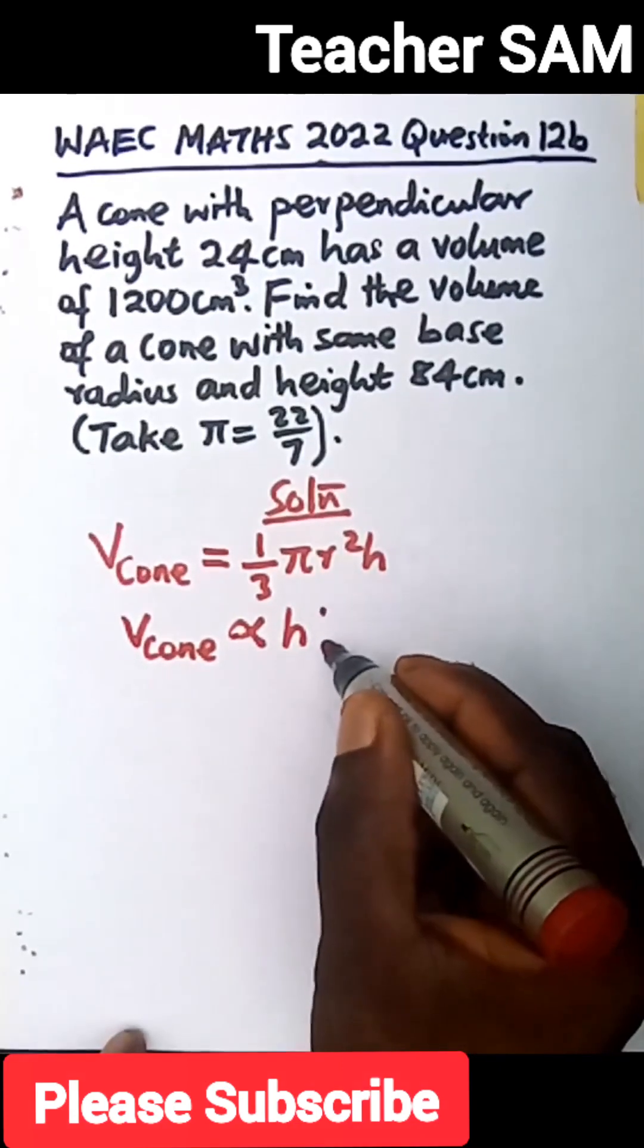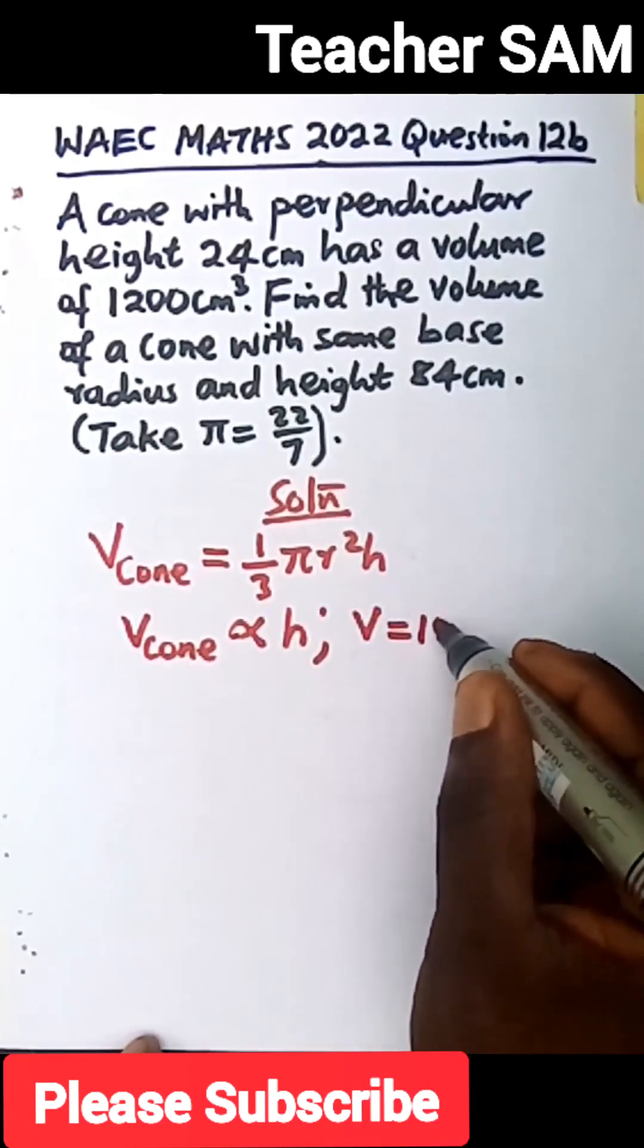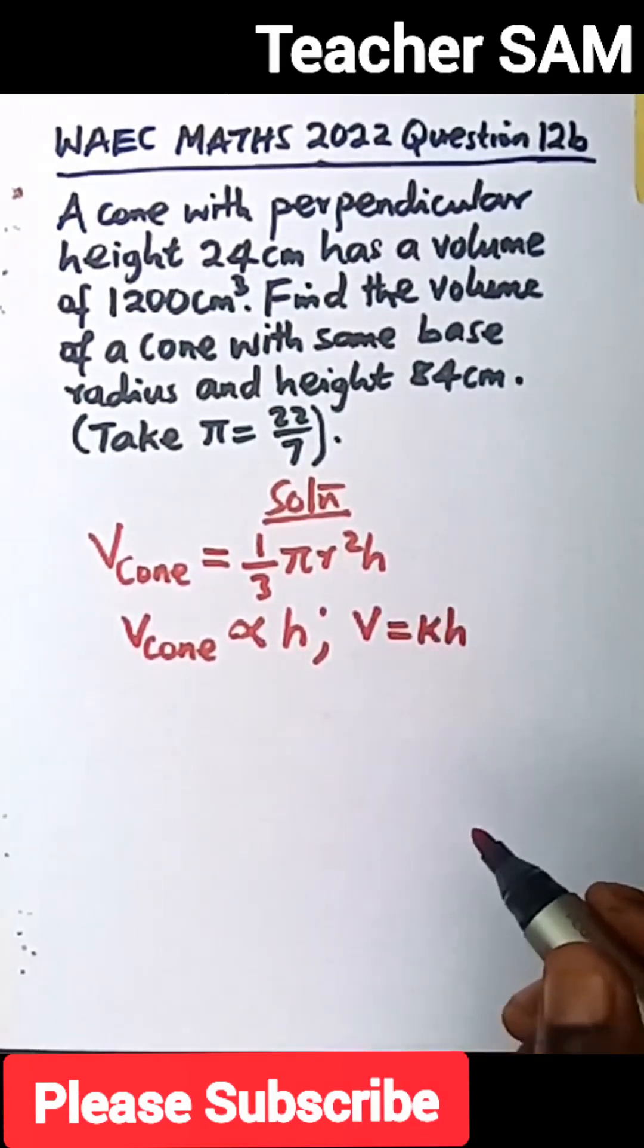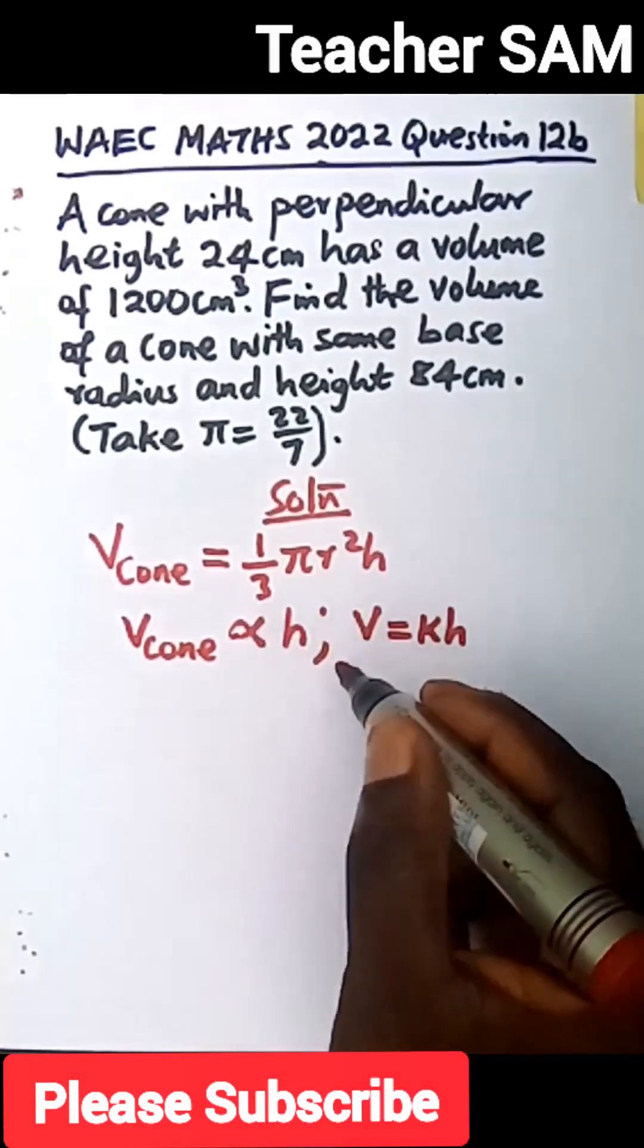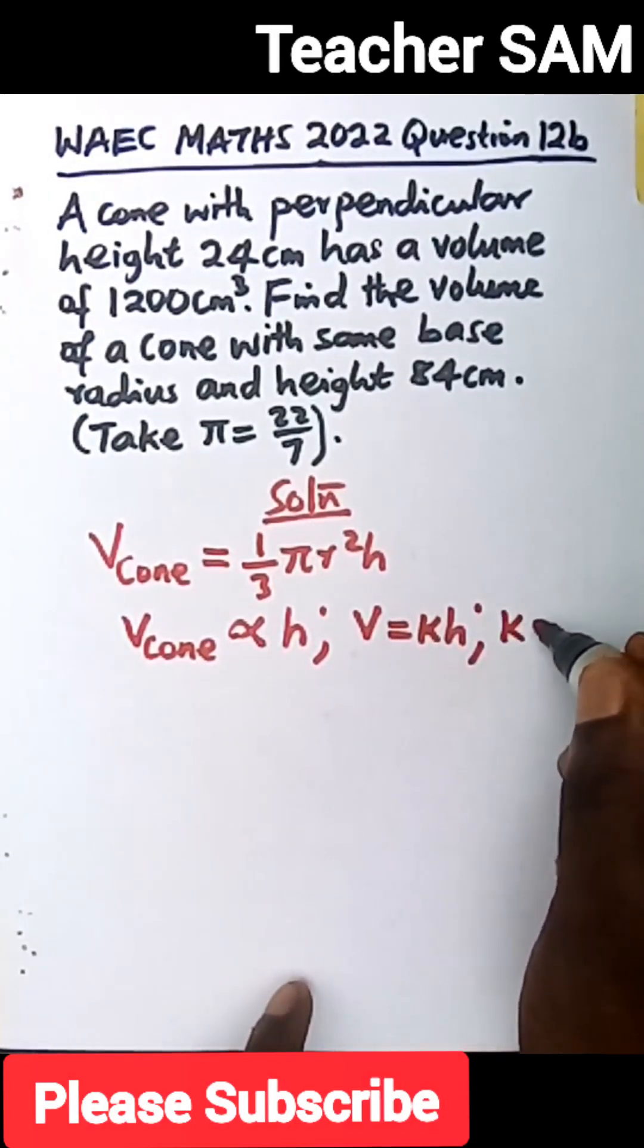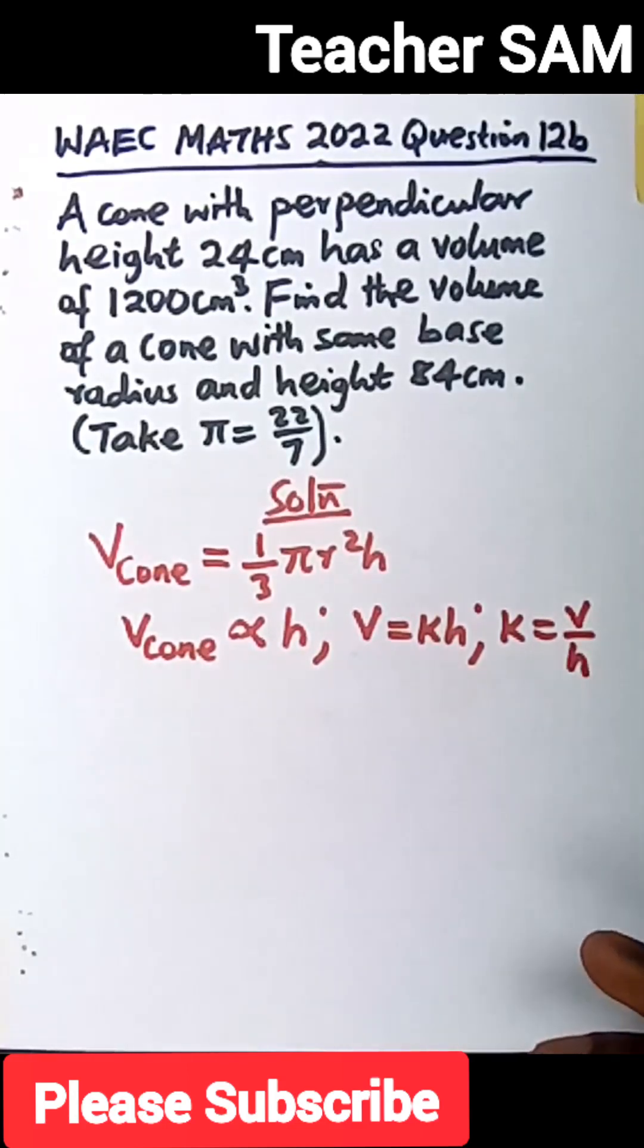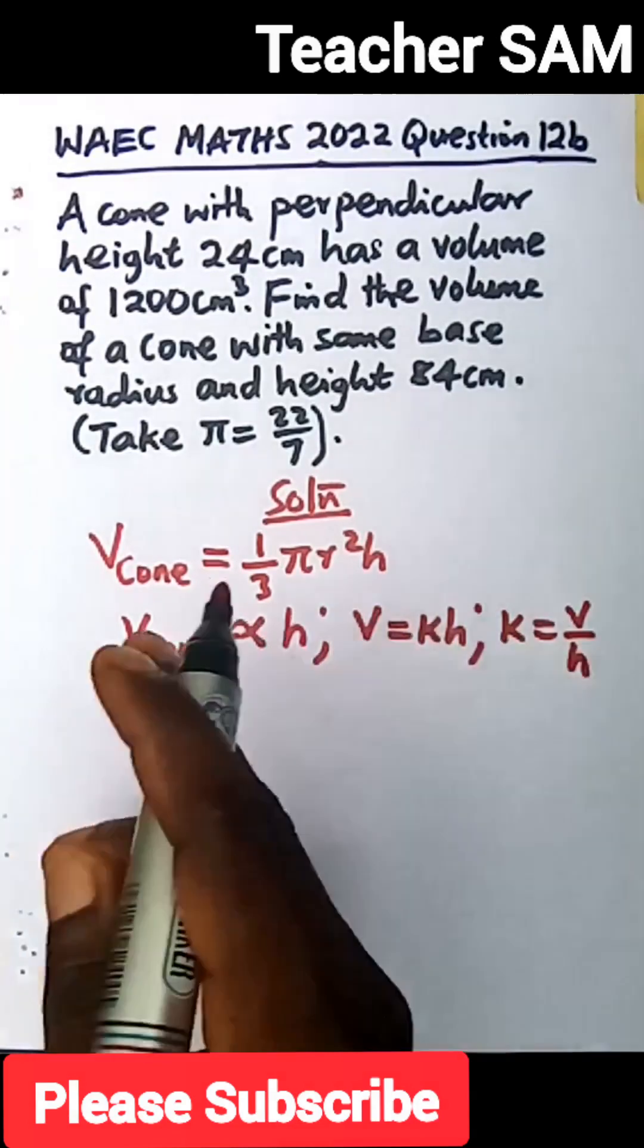If that is true, we can have that the volume is equal to k h. That is to say that we remove this proportionality sign and we bring in the constant. So our constant k will be equal to v over h. That is the relationship between the volume and the height in terms of this relationship.